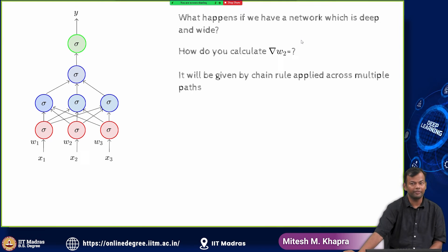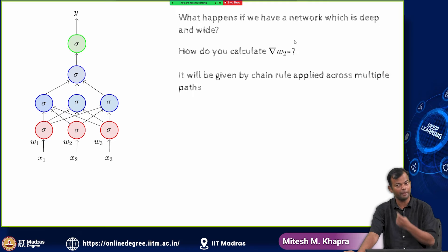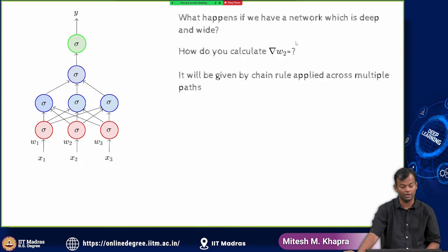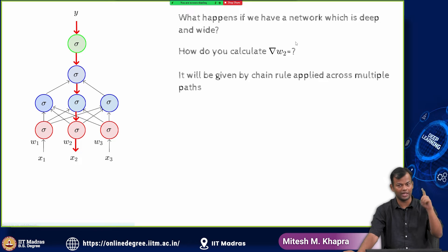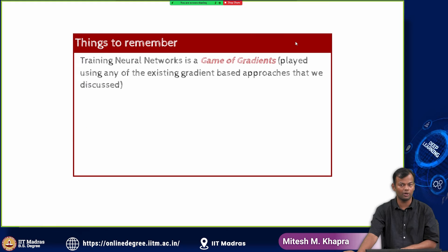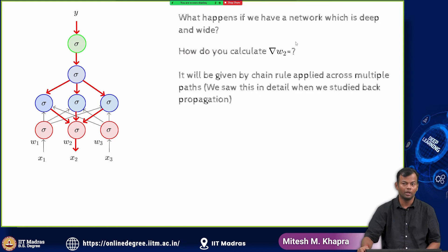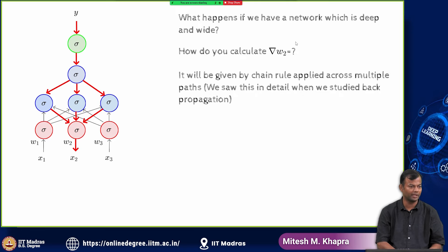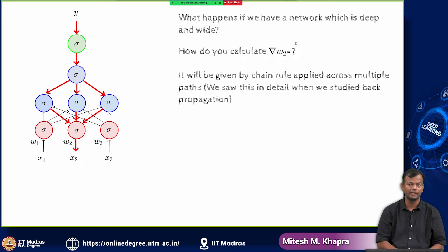Now, if there is a network which is deep and wide, again we calculated the same thing. We calculated the derivative of the loss function with respect to any weight by using this chain rule applied across multiple parts, not just one part, but three different parts here. Again we saw some formula for this, and we derived this in quite detail when we studied the back propagation algorithm.